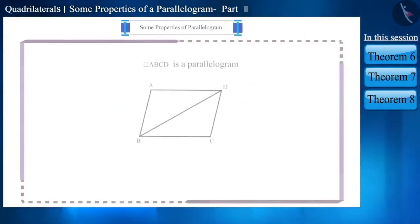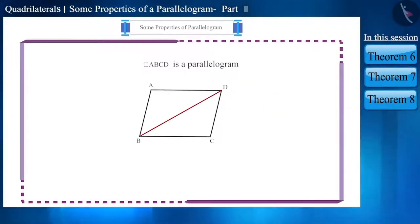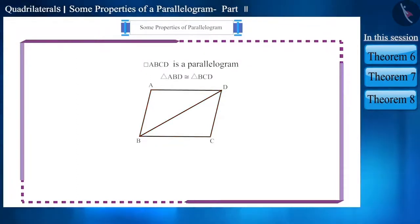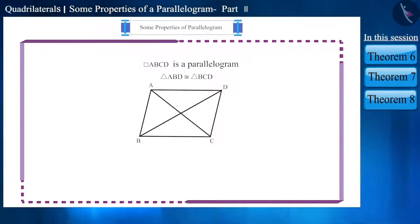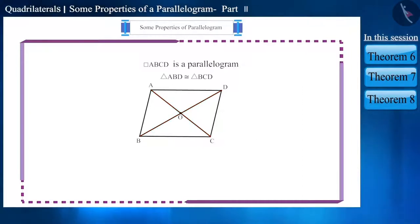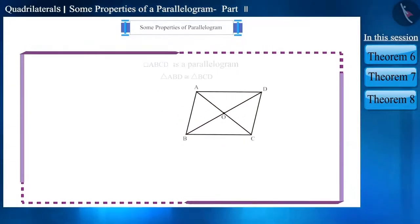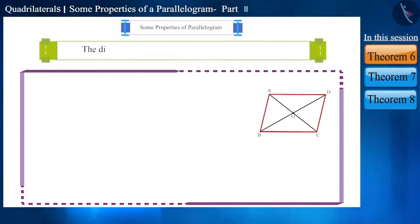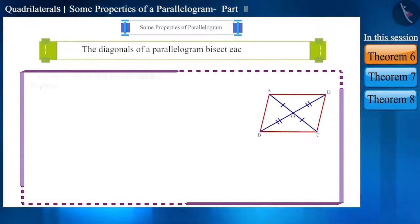Friends, we know that the diagonal of a parallelogram divides it into two congruent triangles. If we construct both the diagonals of a parallelogram such that they intersect each other at O, then what can you say by looking at it? The diagonals of a parallelogram bisect each other.